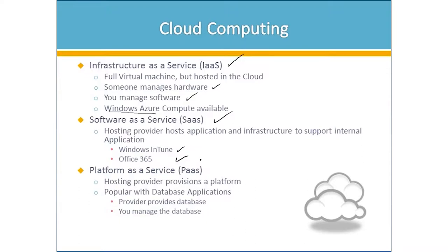A third category of cloud computing is Platform as a Service, or PaaS, which means the hosting provider provisions the platform for hosting all your database applications. They provide the database and you manage it. Unless you're getting into the background of really planning this architecture, the acronyms IaaS, SaaS, and PaaS aren't common speak, but they show that we have three distinct categories of how we're going to host information in the cloud. The cloud is very handy for high availability and letting someone else take care of the hardware and backups.